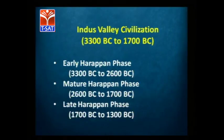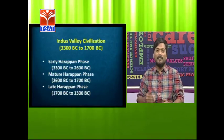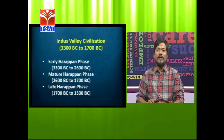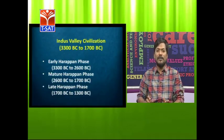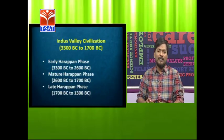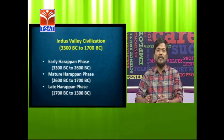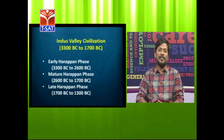Next is Harappa and Mohenjo-daro — the Indus Valley Civilization. In the Indus Valley Civilization you have three phases and you can note down the dates. The civilization dates between 3300 BC to 1700 BC. Within that you have three phases: early, mature, and late Harappan phase — 3300 BC to 2600, then 2600 to 1700, and 1700 to 1300 BC, after which the civilization came to an end.